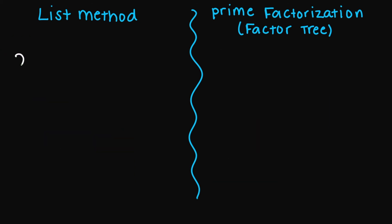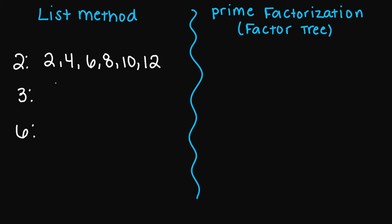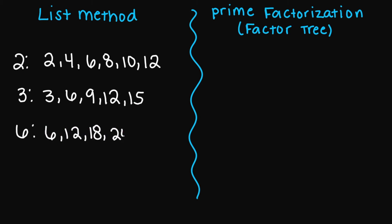So let's try two, three, and six. Multiples of two: 2, 4, 6, 8, 10, 12. Three: 3, 6, 9, 12, 15. And six: 6, 12, 18, 24, 30 — and we'll stop here. The smallest common multiple that all three numbers share is going to be the number six. So your LCM is six.